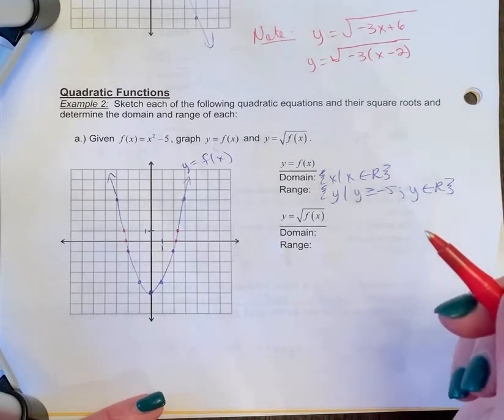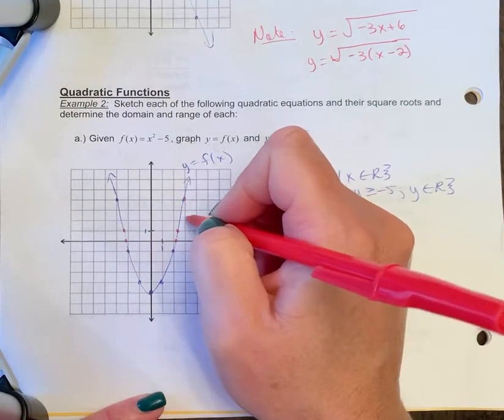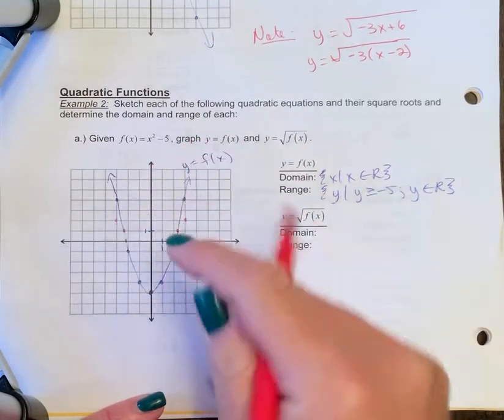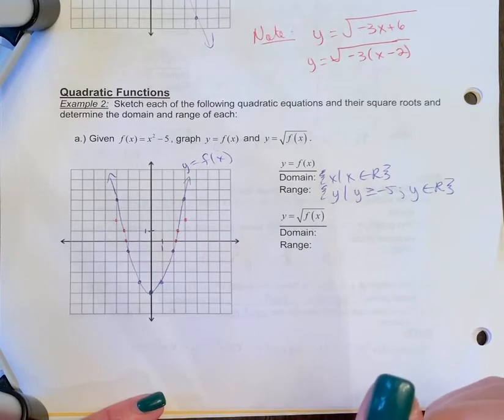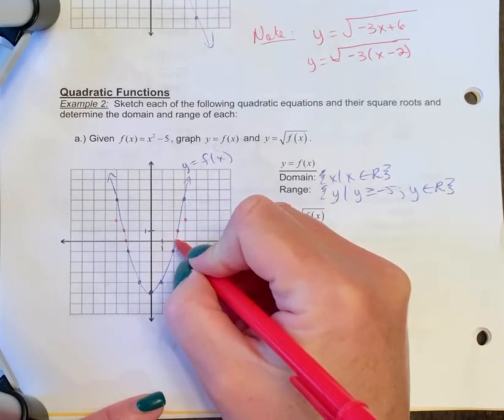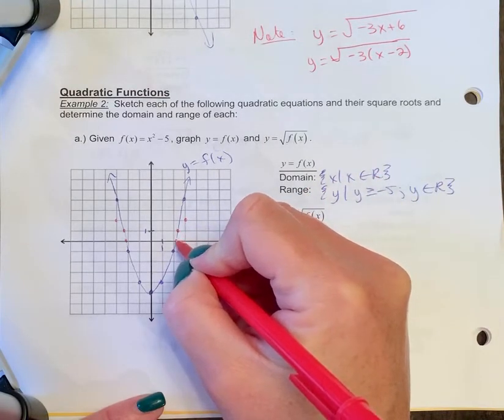Okay, then we're going to square root anything else. The square root of 4 is 2. Square root of 4 is 2. Anything below the x-axis is going to disappear because you can't square root negative y values.